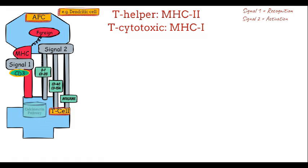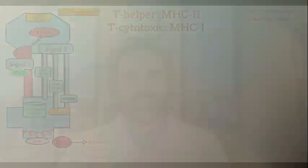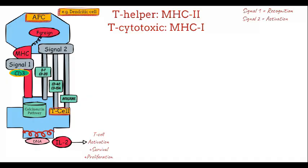These co-stimulatory signals activate the calcineurin pathway, leading to the production of the cytokine interleukin-2. IL-2 plays a central role in promoting T-cell activation, survival, and proliferation. Without signal 2, T-cells become anergic and fail to respond.